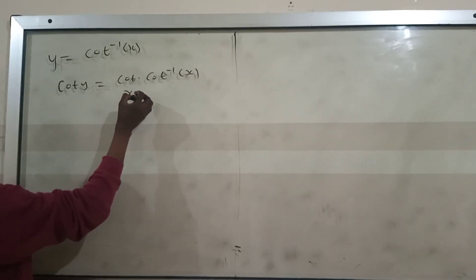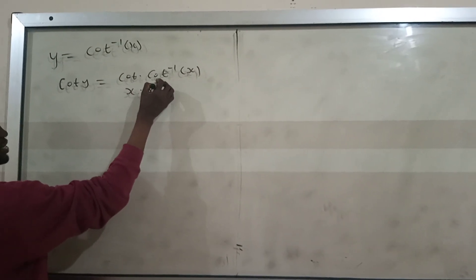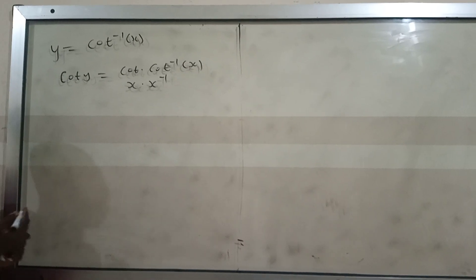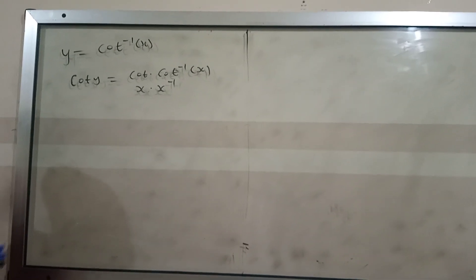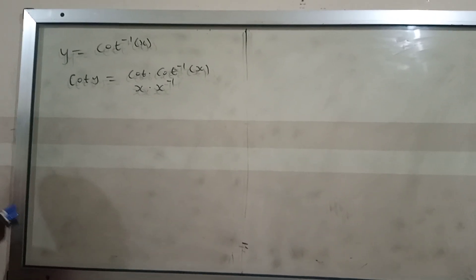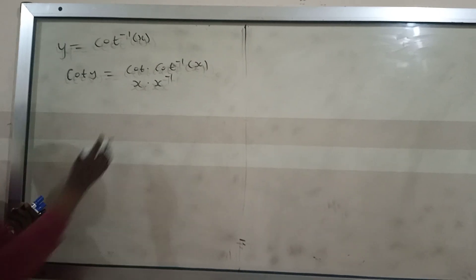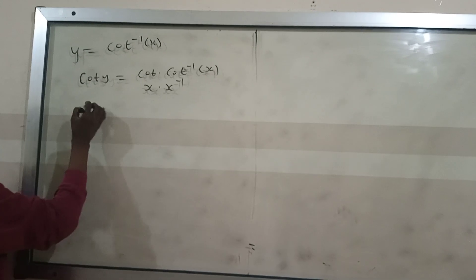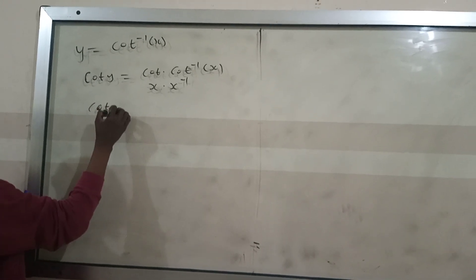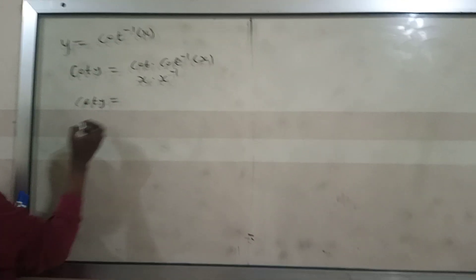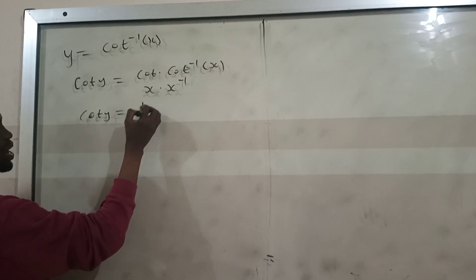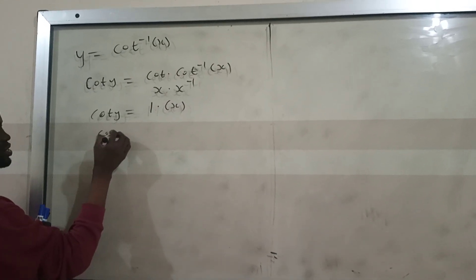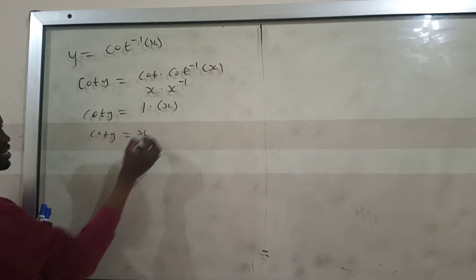This is just like s times x inverse — any number times its inverse gives you 1, or any variable times its inverse gives you 1. So cot times cot inverse is just 1, and we get cot(y) equal to 1 times x, which is the same as cot(y) equal to x.